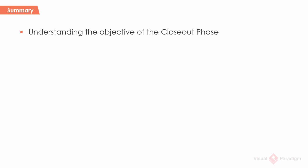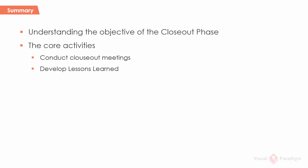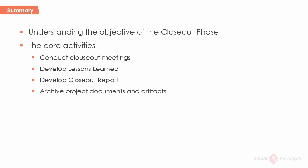Let's have a quick summary of the closeout phase. The project team documents the lessons learned and transfers the deliverables to the operations staff, who will use and maintain them as an ongoing activity. Core activities include: conducting closeout meetings to identify lessons learned, develop transition plans, and post-implementation review plans; developing lessons learned documents to convert experiences into knowledge for future decision-making; developing the closeout report to identify variances from baseline plans in terms of performance, cost, and schedule; archiving project documents and artifacts; and conducting transitioning activities to transfer the product and required knowledge to operations staff.